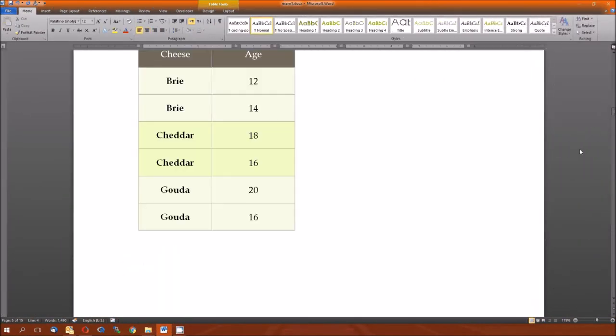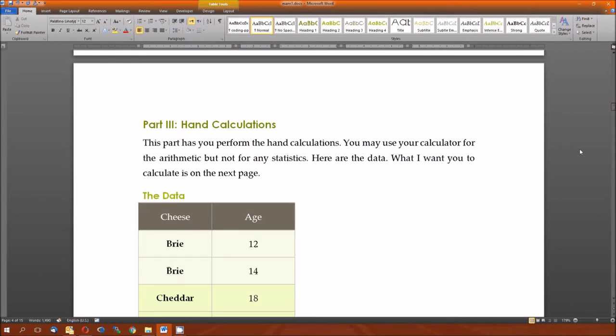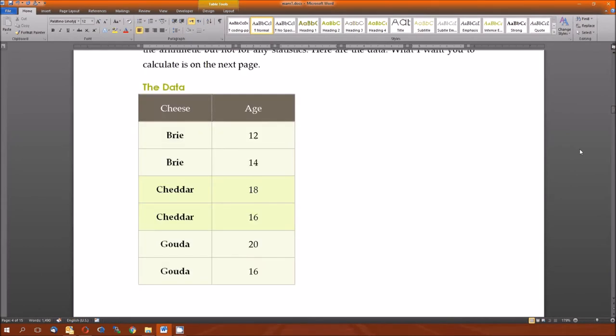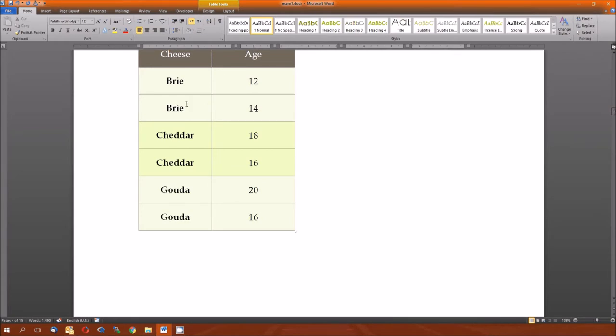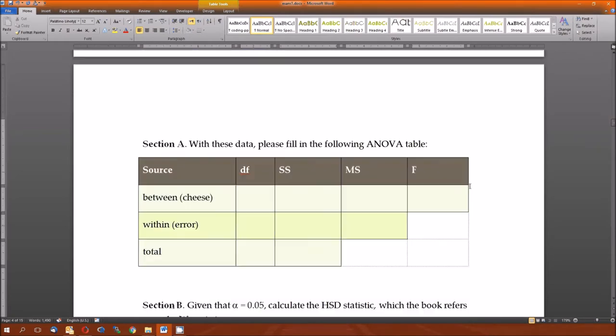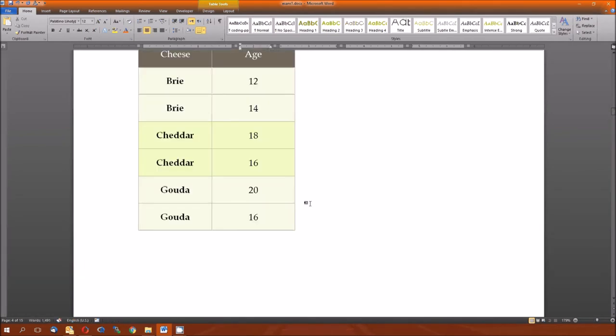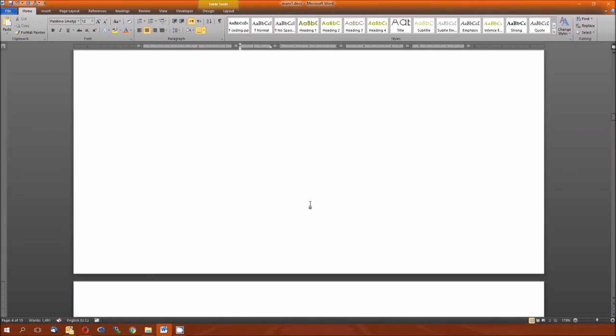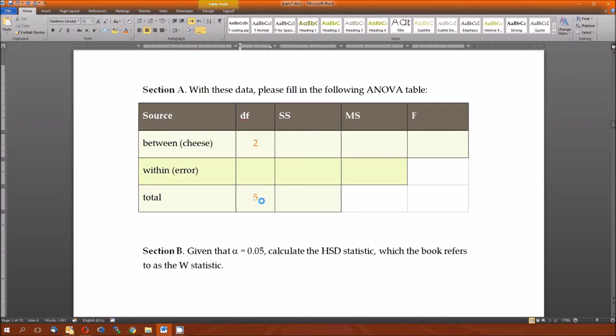Here's part three. Part three starts back here with the hand calculations. I did want to see the hand calculations. I've noticed that there's three groups. So, t is equal to three. Since t is equal to three, that means the degrees of freedom for between is two. There's six measurements. That means that the total degrees of freedom will be five. Five minus two is three. Boom.